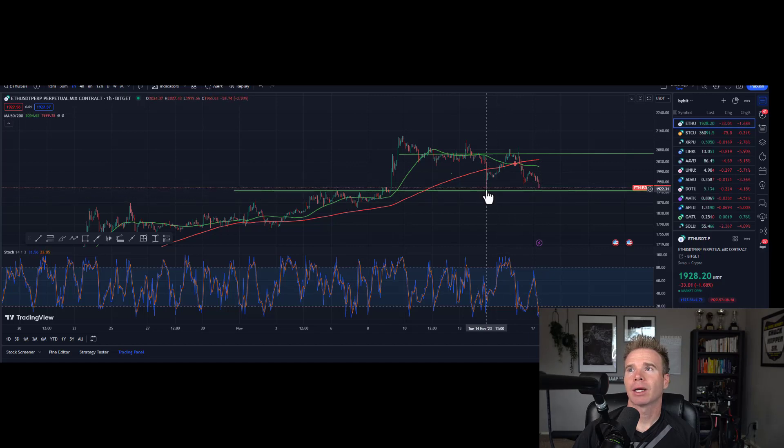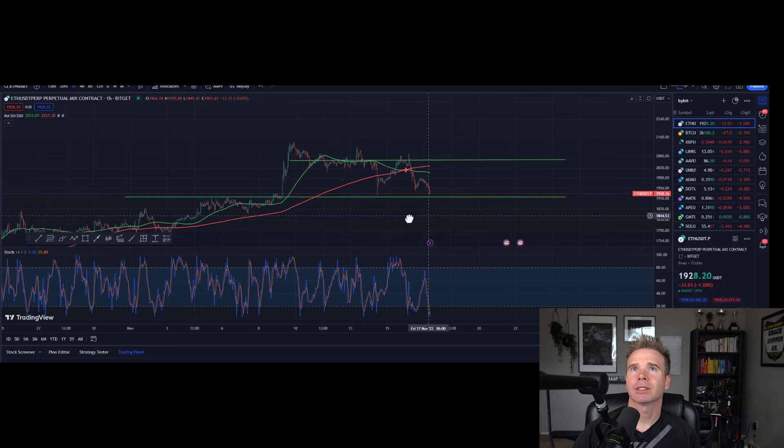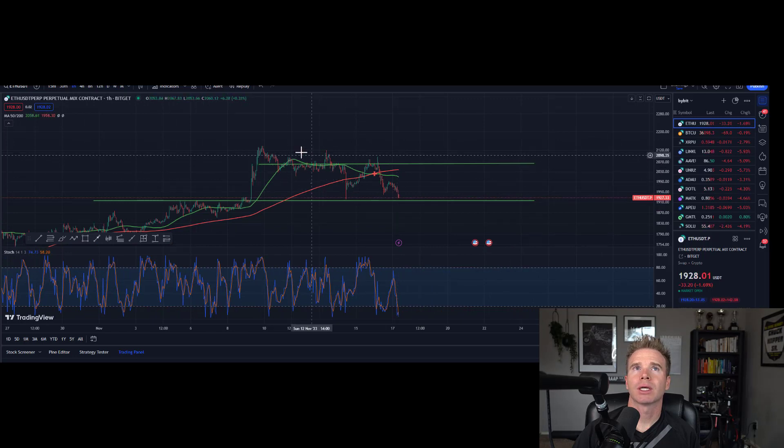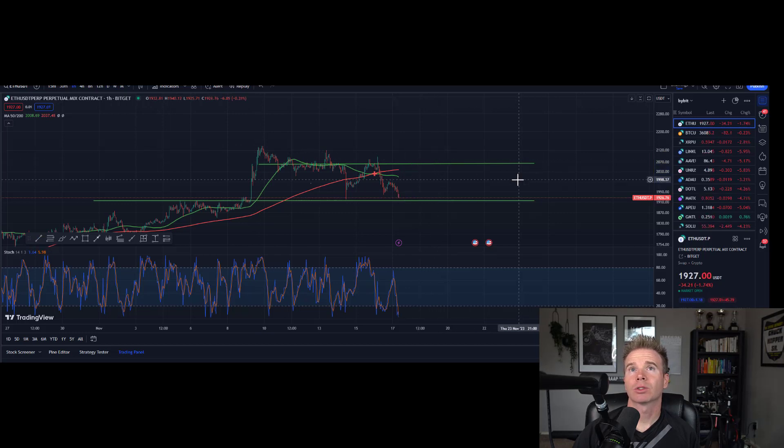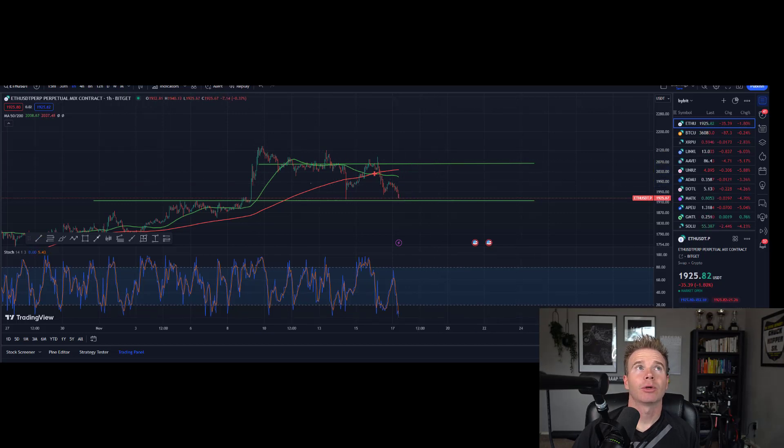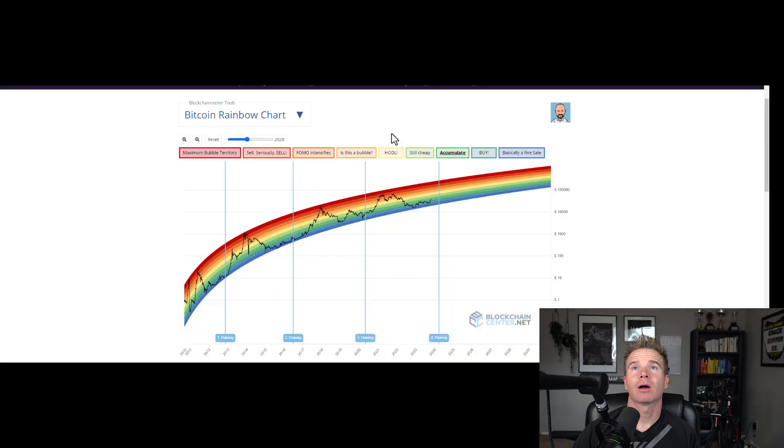I'm thinking we might not get under that 1919, but we will see. I do suspect by Christmas we are going to see a new all-time high for the year of the 2140 range. But that's what I am thinking, and I hope you guys understand what is going on with this Bitcoin Rainbow and the opportunity that you have in front of you to accumulate.